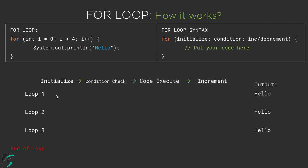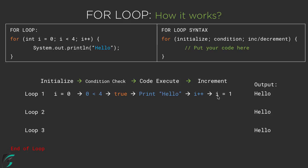Inside loop 1, we first initialize the counter variable: int i = 0. Then we check the condition — 0 is smaller than 4, which is true. So we execute the code and print 'hello'. Finally, at the end of loop 1, we increment the counter by 1 using i++, so i was 0 and is now 1. The termination of loop 1 marks the beginning of loop 2.